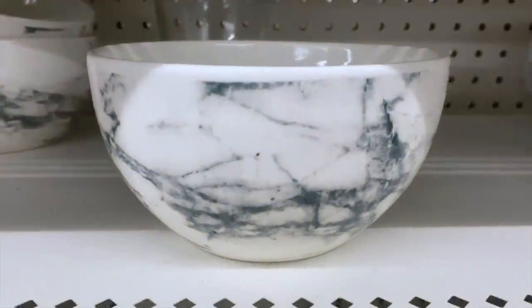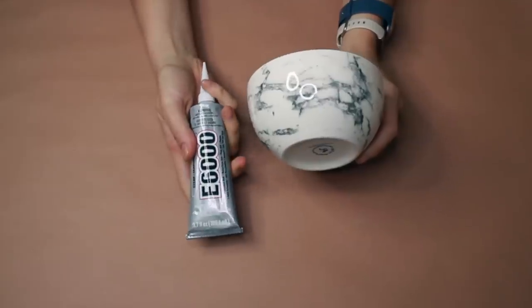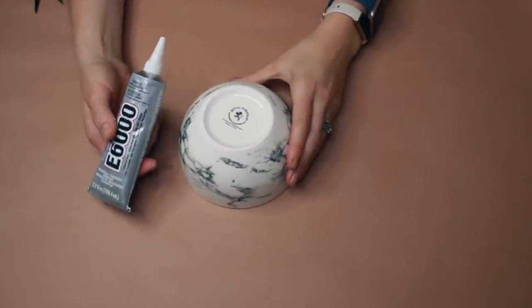Alright, so for this project we are going to start with seven of these bowls. I got them from Dollar Tree. You're also going to need some E6000 and you want to give yourself enough time for this to dry overnight.